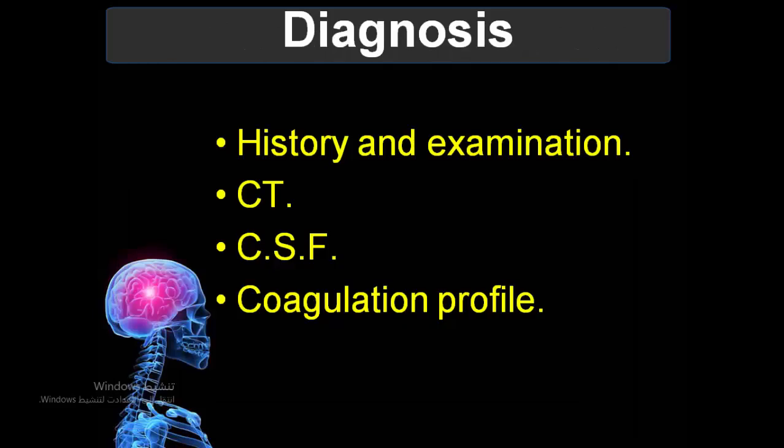For diagnosis, history and examination are key. History may reveal trauma, or features suggesting congenital aneurysm such as polycystic kidney, Turner syndrome, or coarctation of the aorta. These findings make us suspect subarachnoid hemorrhage. After clinical assessment, CT scan is done to rule out very high intracranial pressure.